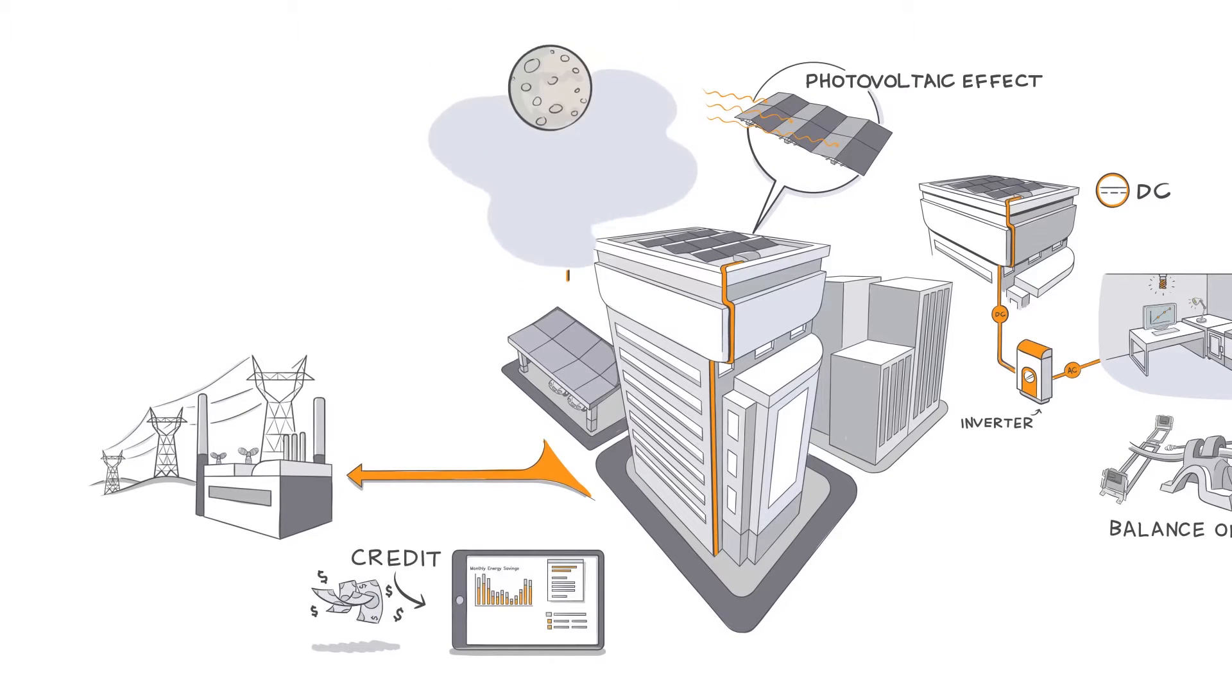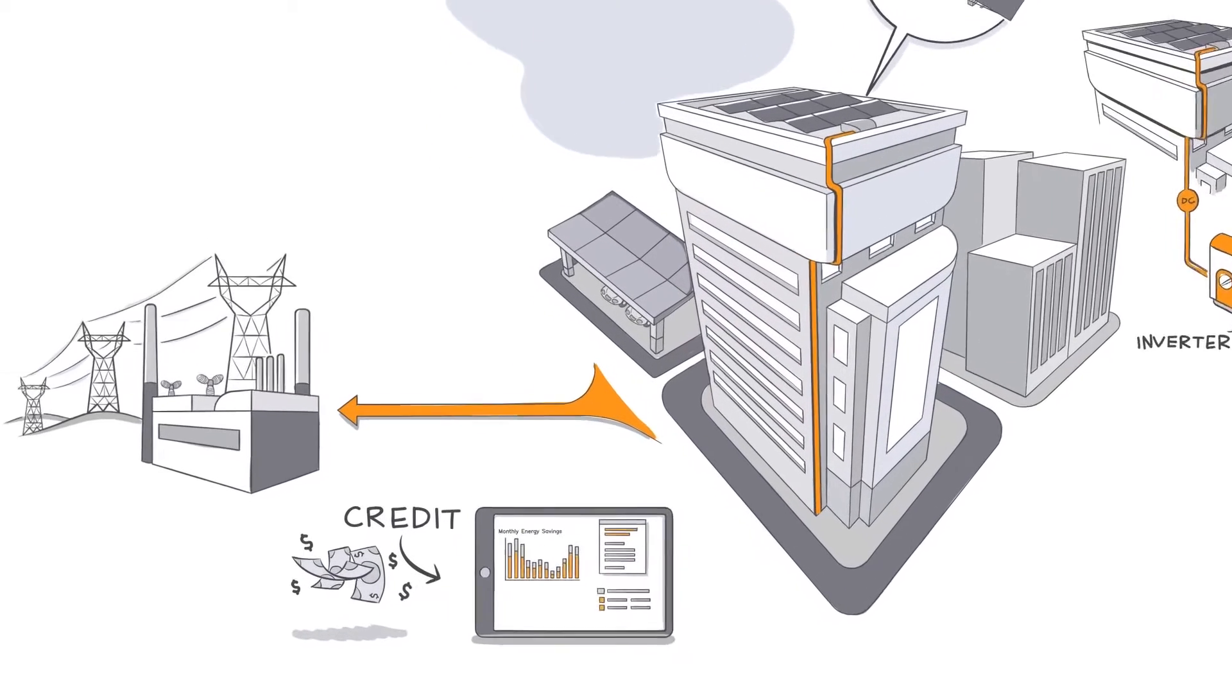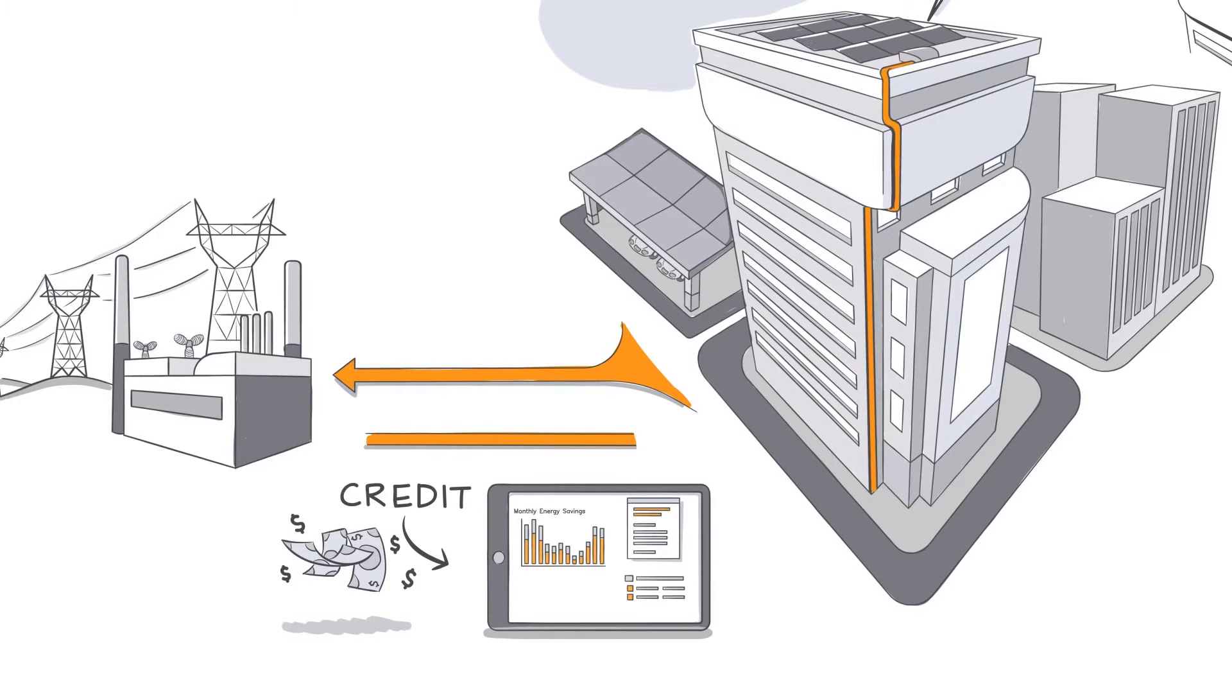Then, at night, or on not-so-sunny days, you pull the energy you need from your utility using that credit to offset your costs. It could even eliminate your bill altogether.